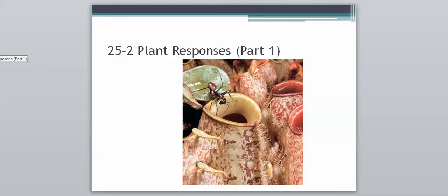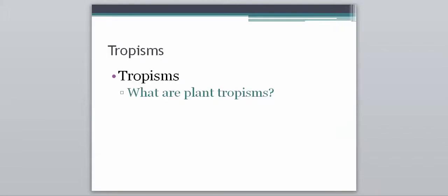Hello Bio 2. Now we're starting section 2 in chapter 25 and this is going to be plant responses. So we've talked about how hormones can affect the plant. Now we're going to talk about the actual responses that the plant has that the hormones are a result of. And so the word that we've been hearing a little bit that now we're going to actually define here are tropisms. So we're going to look at what are plant tropisms.